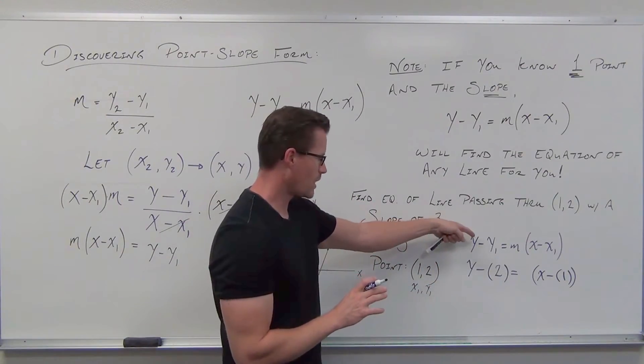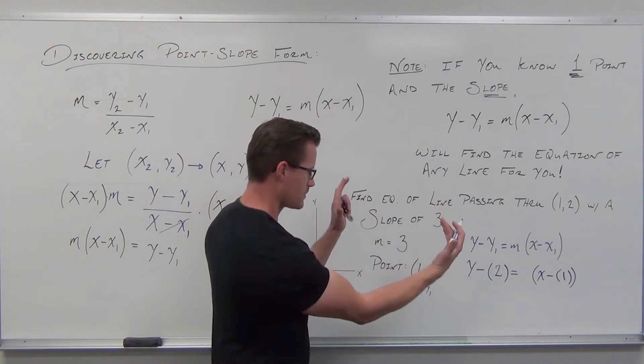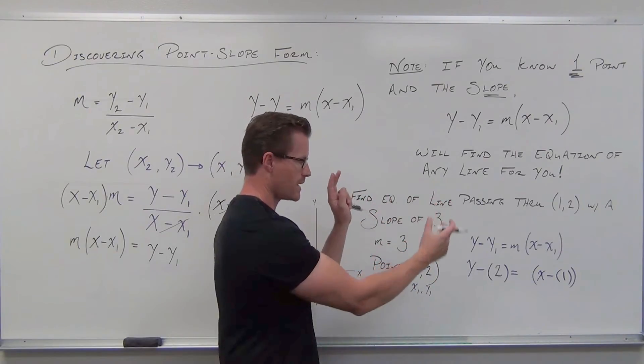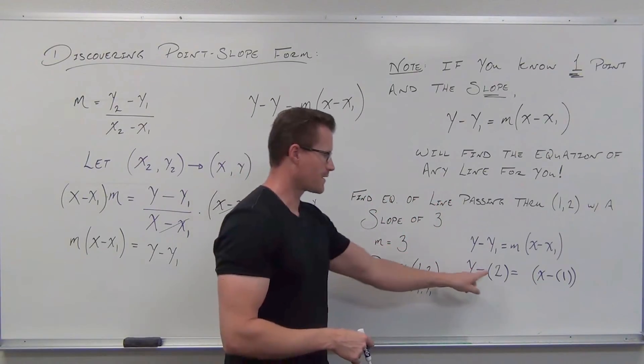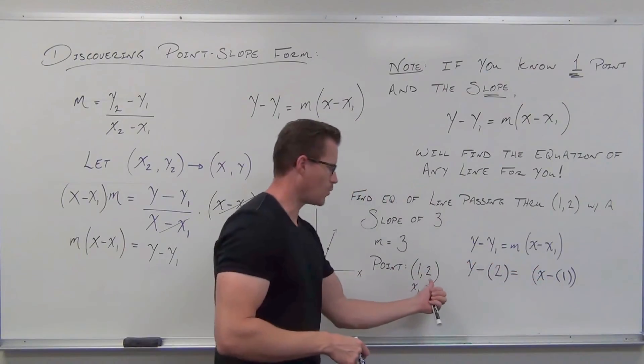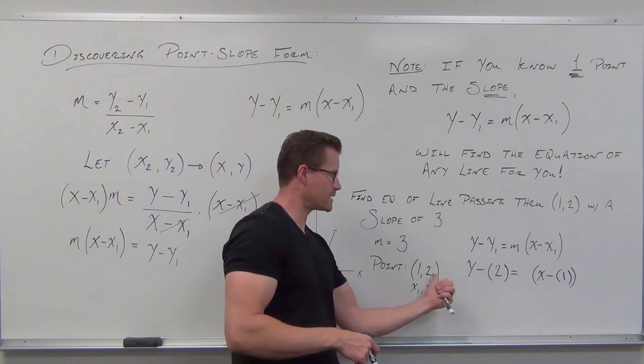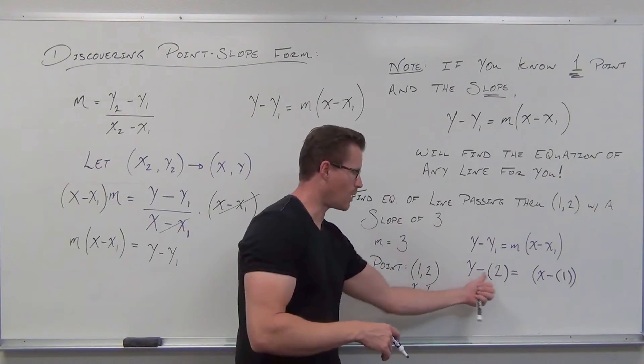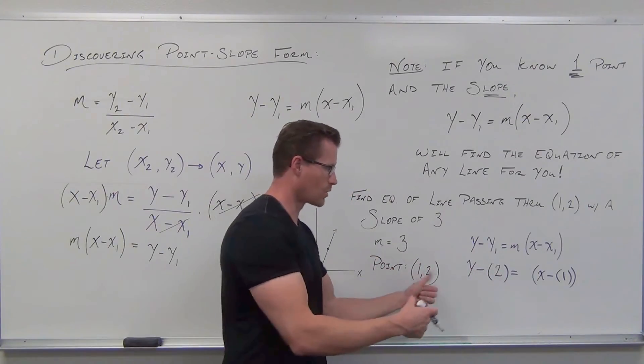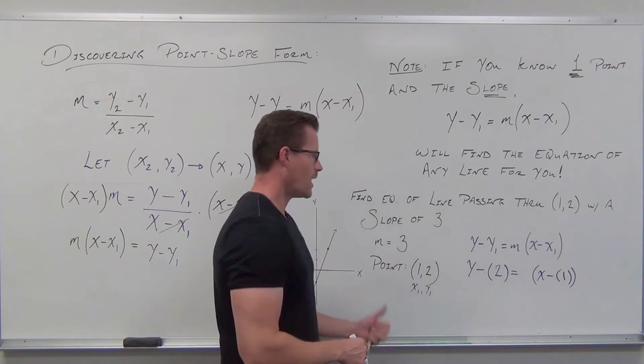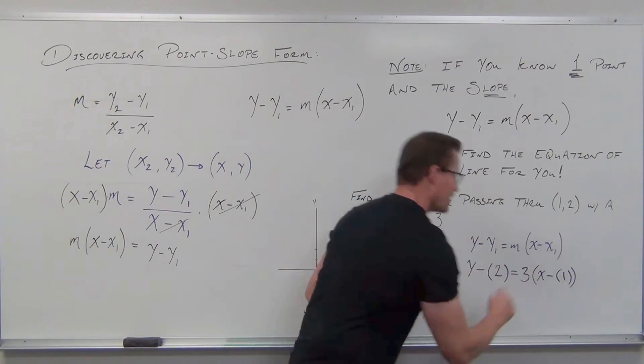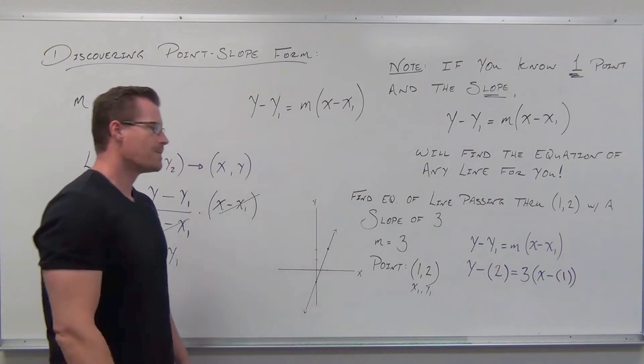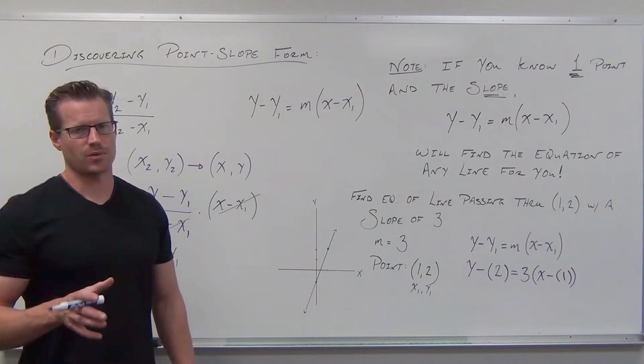Let's double check real quick. So y minus y1. I have y minus, my y1 fit in there. X minus x1. I have x minus, my x1 fit in there. I've got my 2, I've got my 1. My y coordinate next to my y variable. X coordinate next to my x variable. All I've got to do is slip that slope right in there. And then do some very basic order operations.